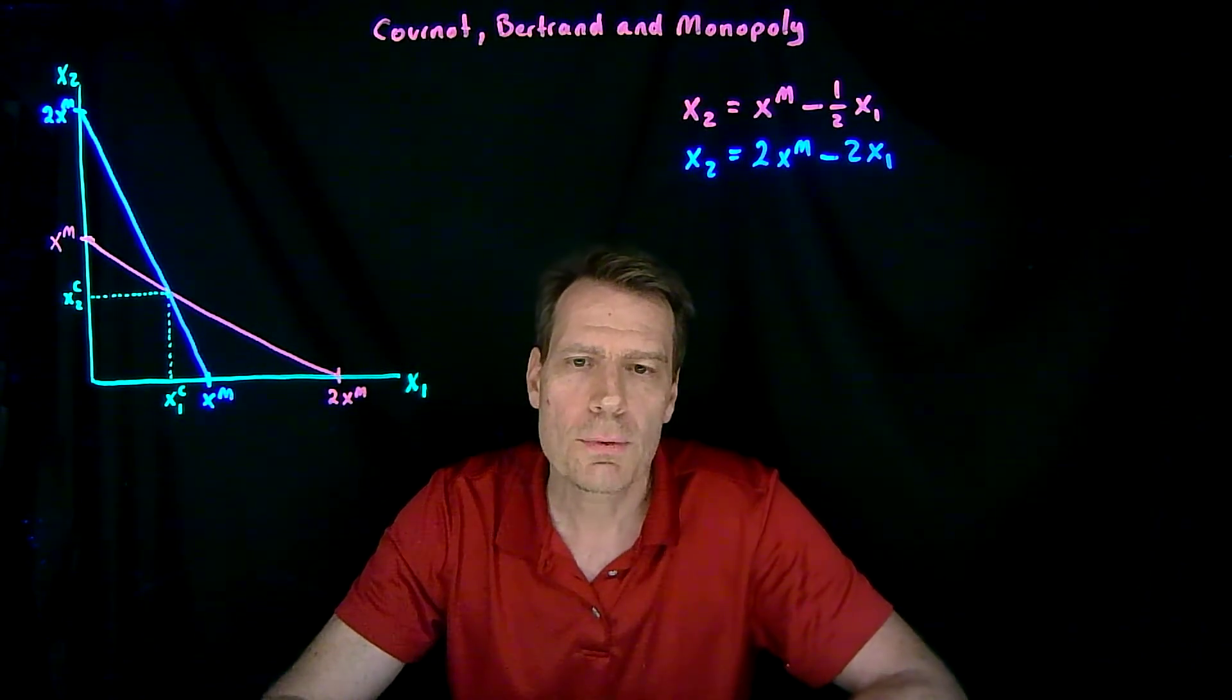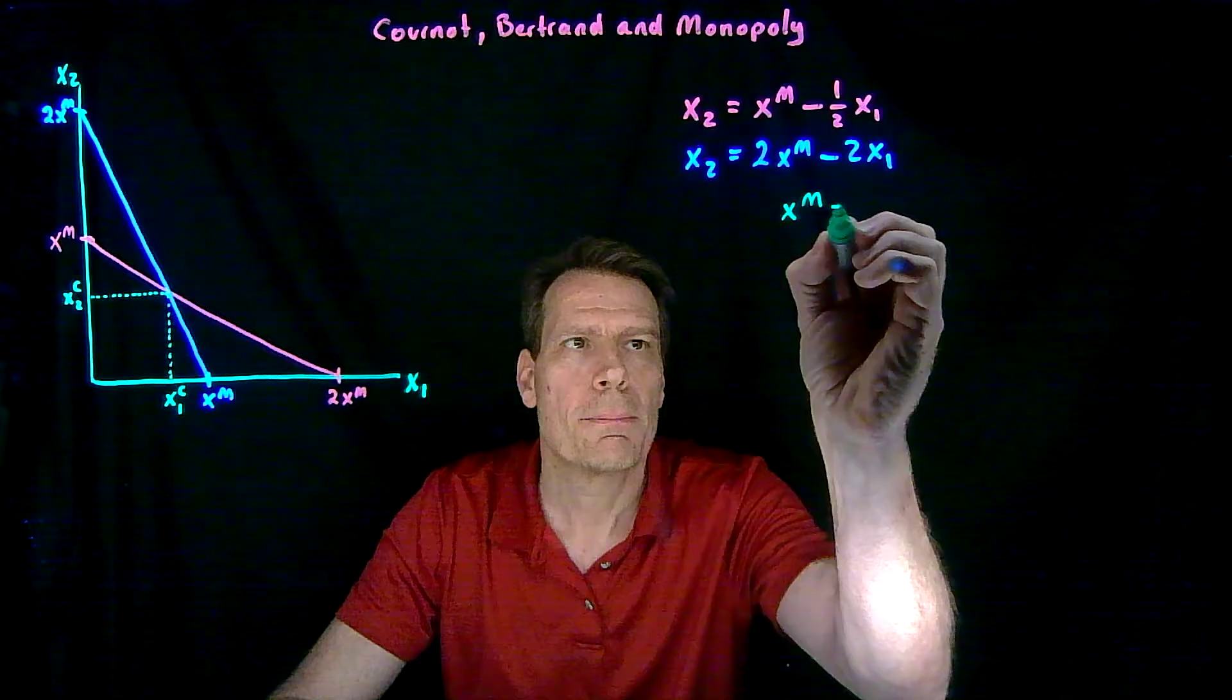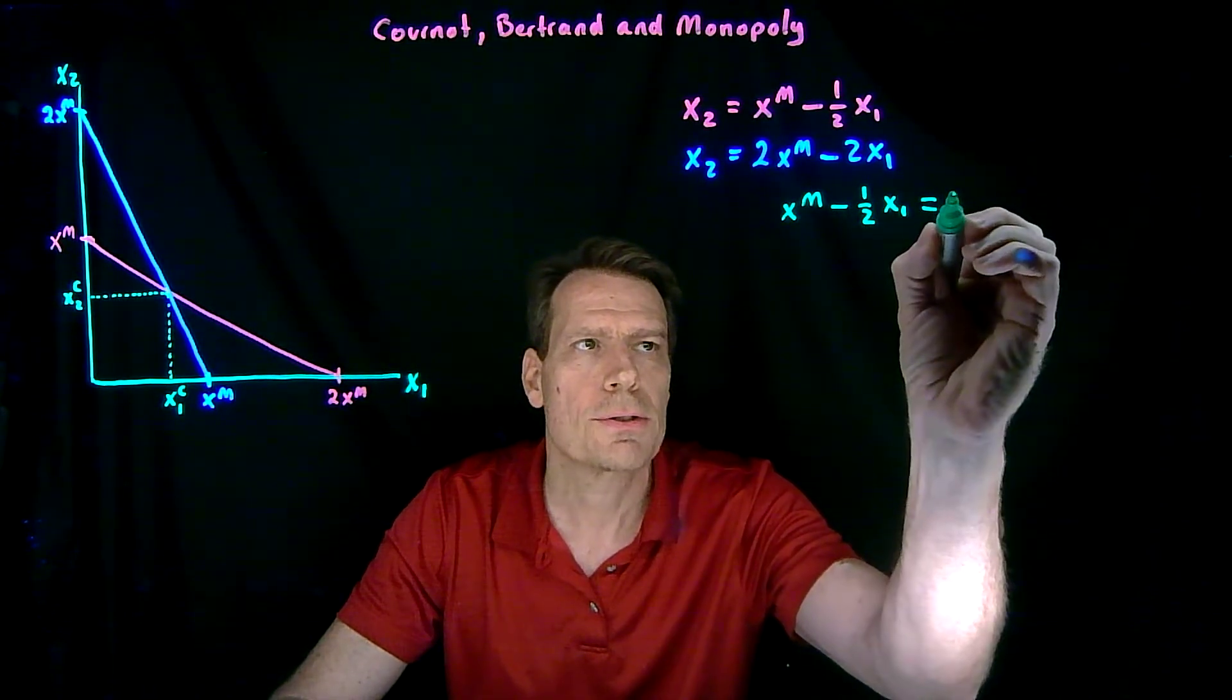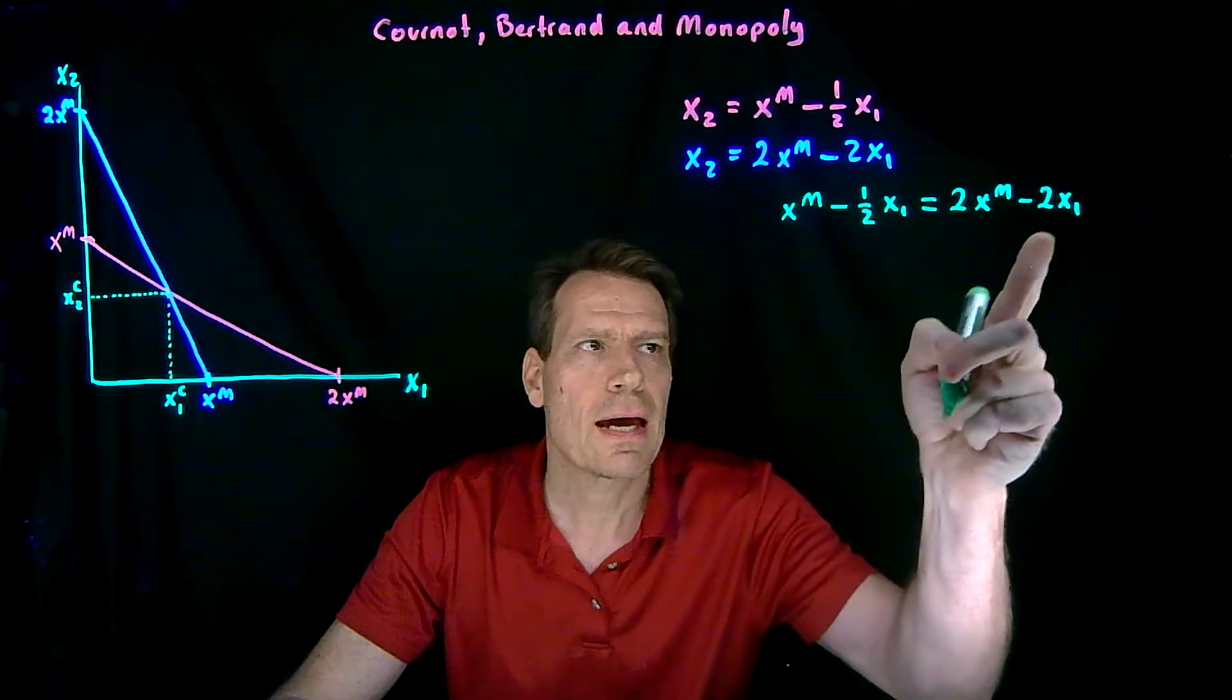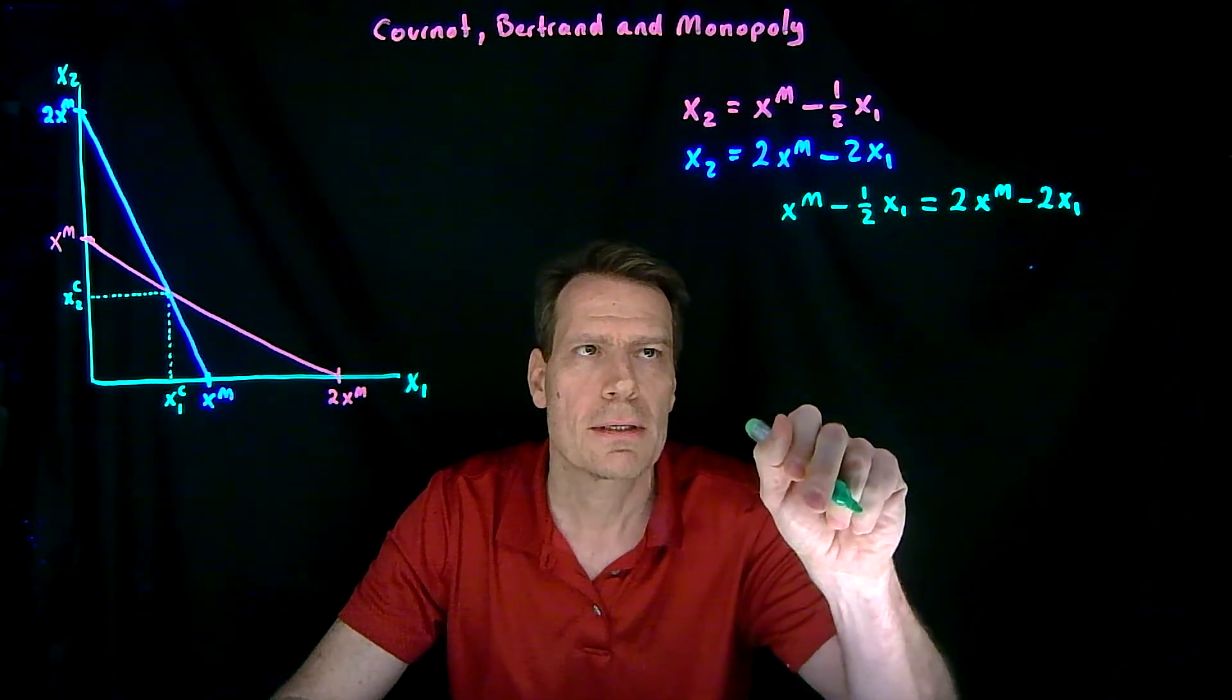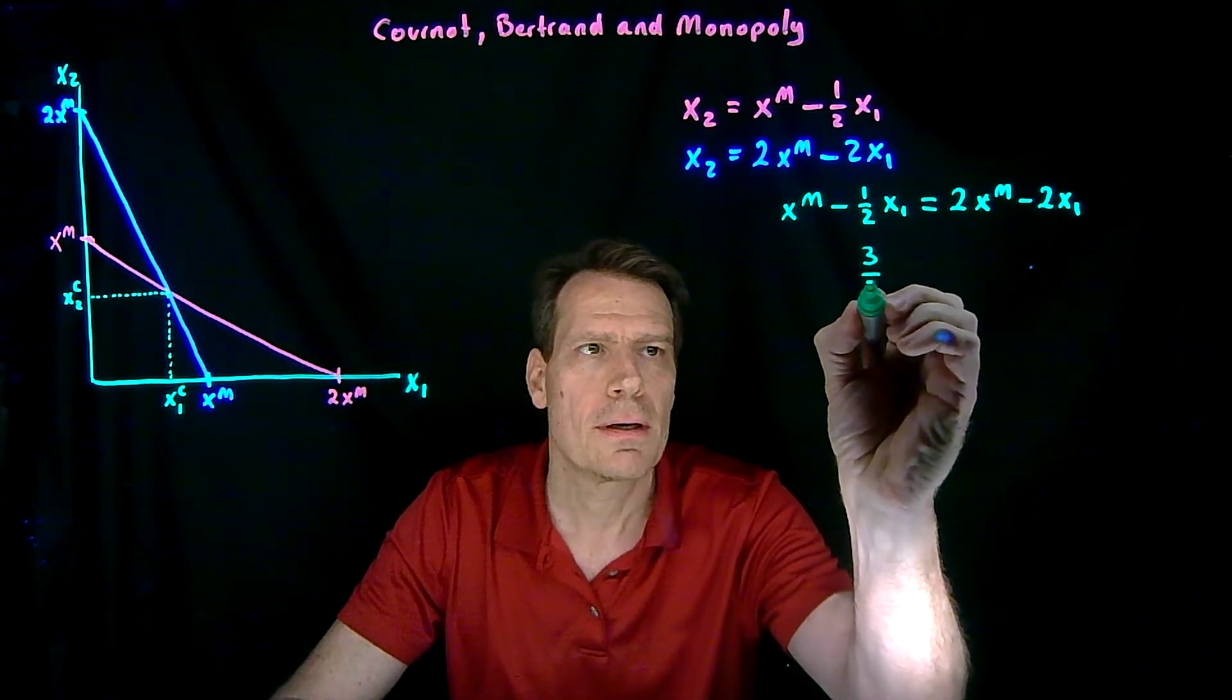When we set those two equations equal to each other, we can find the intersection point. So we get the first equation, xm minus 1 half x1, and set it equal to the second equation, 2xm minus 2x1. We then gather all the x1 on one side by adding 2x1 to both sides, so we get 2x1 minus 1 half x1. That gives us 3 halves x1.